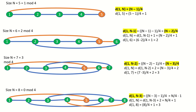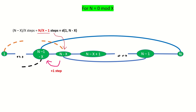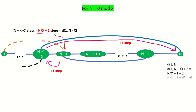And if you think about it this happens for any skip x graph where n is 0 mod x. We can always get to the x-to-last vertex in n minus x over x steps, or n over x minus 1 steps. And then we can always take one step backwards to get in line and then take one skip forwards, meaning that the last vertex is always reached in n over x plus 1 steps for a skip x graph of size n.